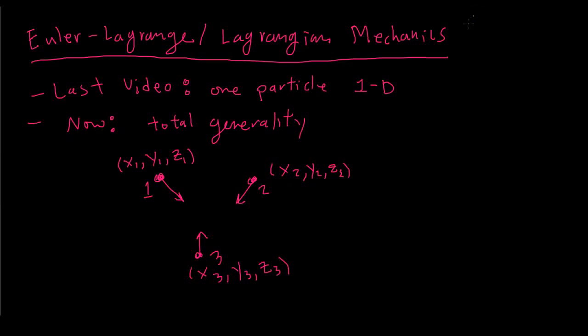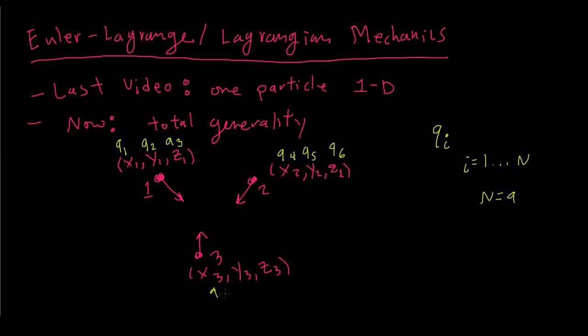We're going to have a new way of writing this. We're going to refer to all of the variables as q sub i. Physicists like to use q a lot of the time to denote a coordinate. Here i is a little integer that could be any number from 1 to n, where n could be any number. In this case n would be 9, because there are nine coordinates we want to keep track of. So x1 is q1, y1 is q2, z1 is q3, and we label all nine coordinates q sub 1 through 9.